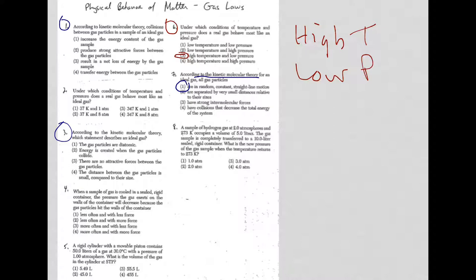We have a sample of hydrogen gas. We got 2 ATM, 273 Kelvin, occupies a volume of 5 liters. The gas sample is completely transferred into a different volume container. What's the new pressure? And now the temperature returns to 273. So really, what we're dealing with here is constant temperature. Well, I need the combined gas law equation.